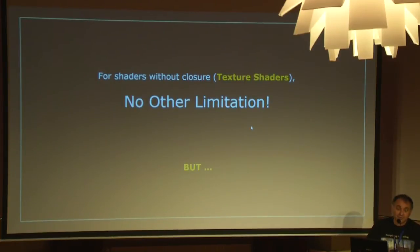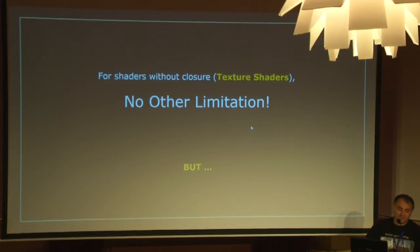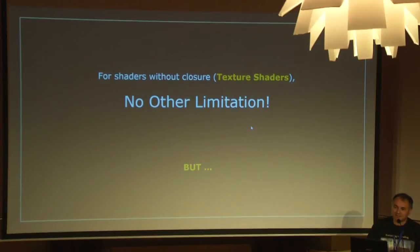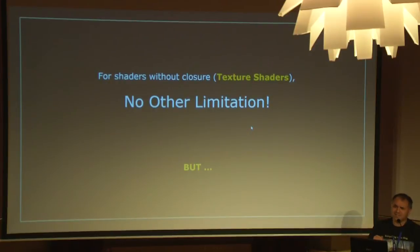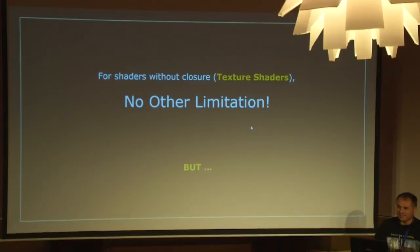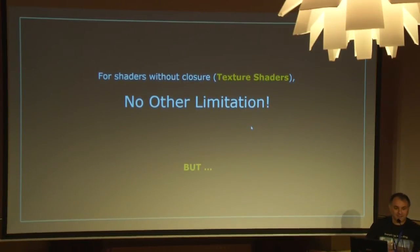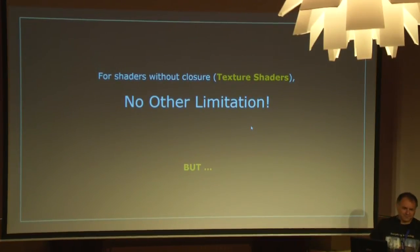One good news is that all those limitations are the only ones if you are not using closures. What we call a texture shader is just changing the color — like a checker and so on. If you are doing such a geometric and texture shader, there is no other limitation. You can have your script with just color output, compile it with Blender, and use it in AppleSeed. It works very well. If you are using it in V-Ray, it's not the same cell specification, so you will have a nice V-Ray crash. But if you copy-paste the code, it works very well.